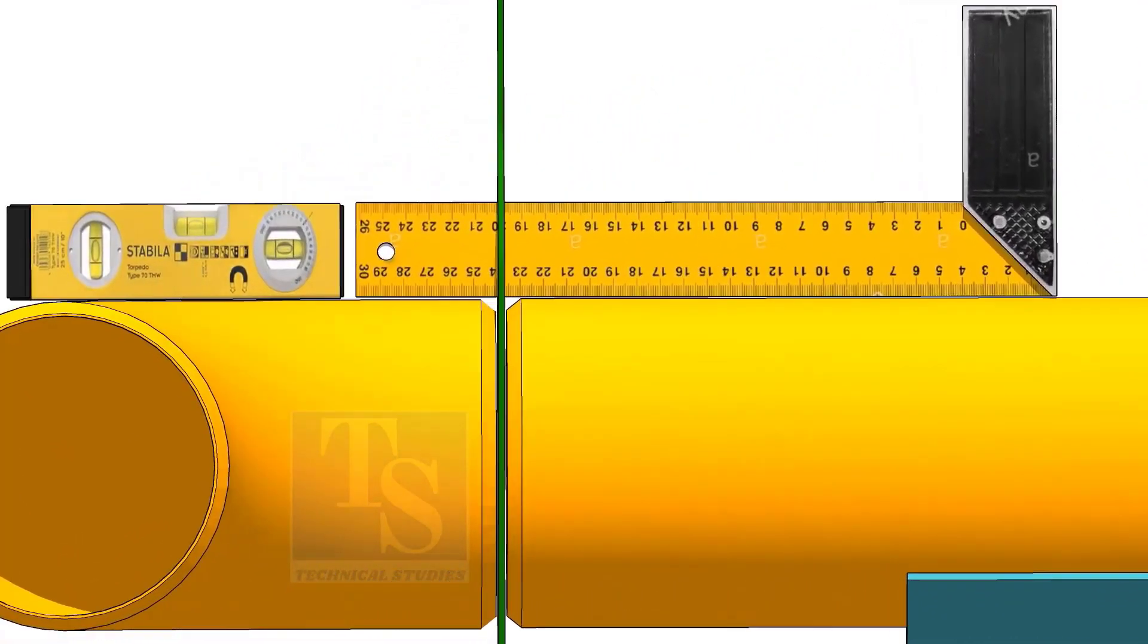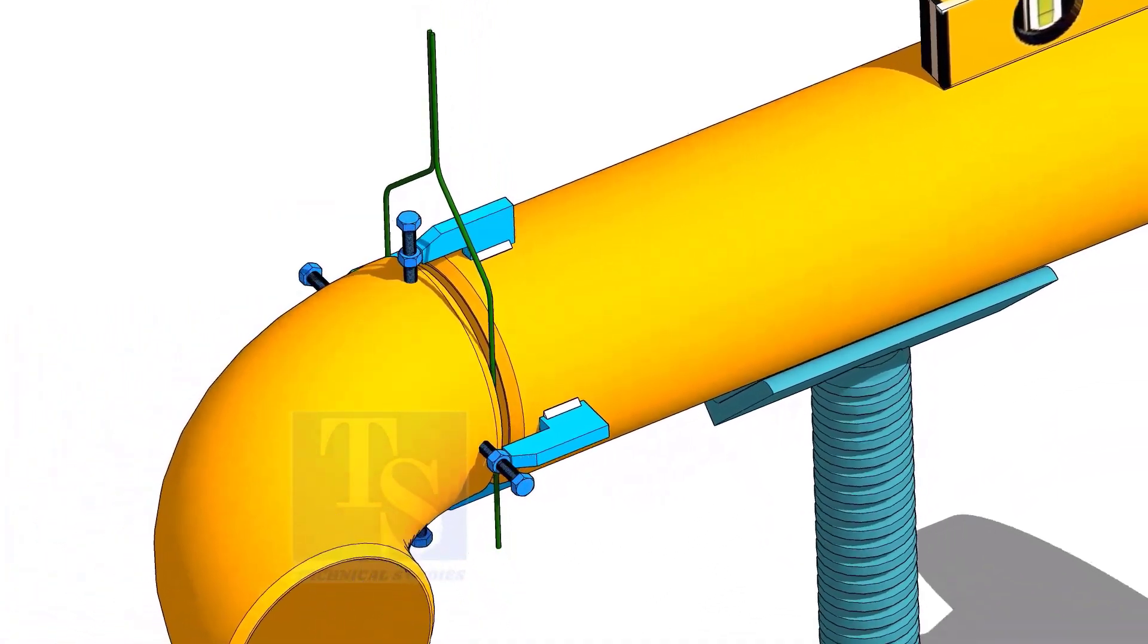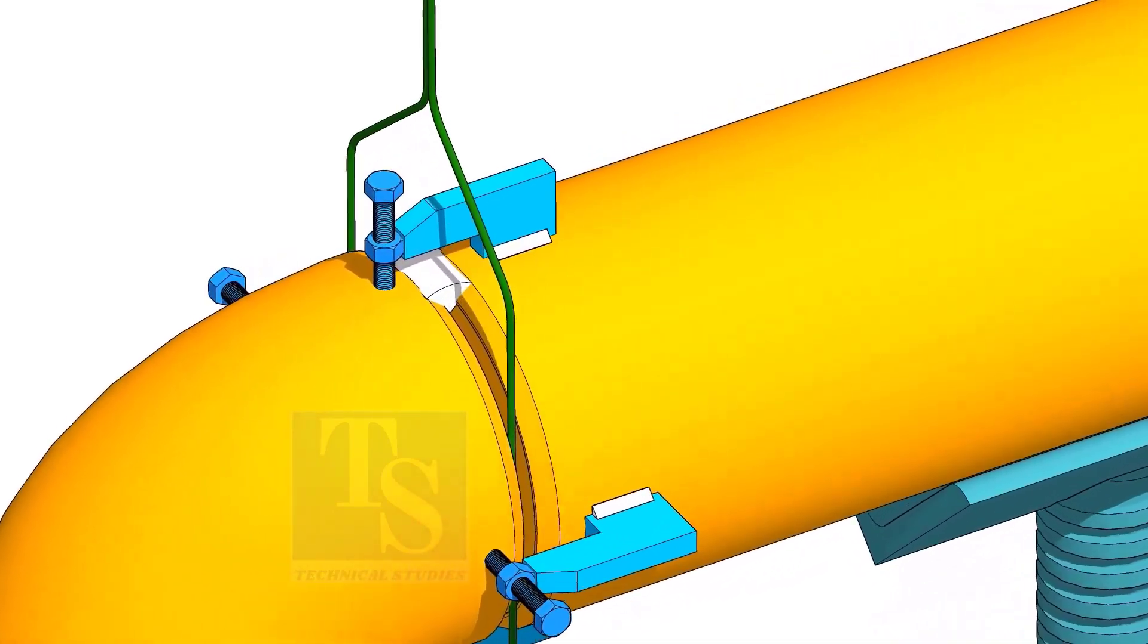Correct the overlap. Tack weld on the top of the joint.